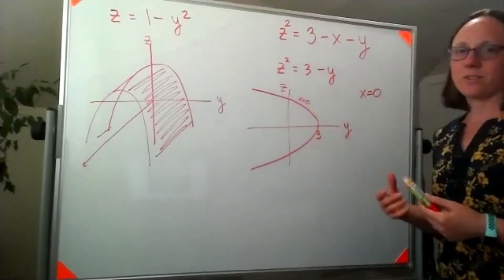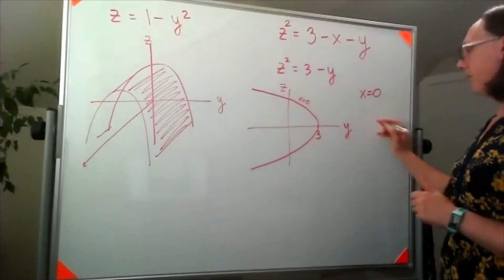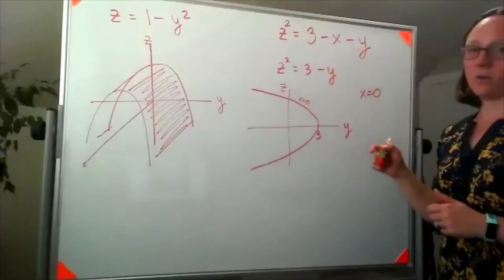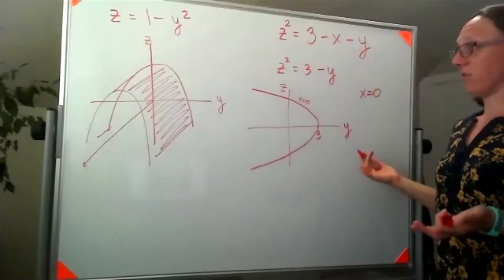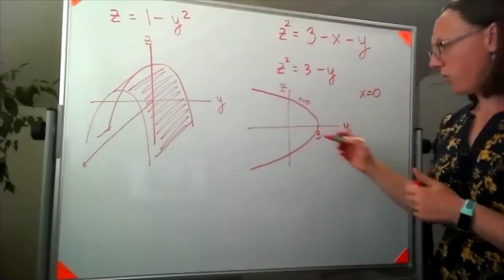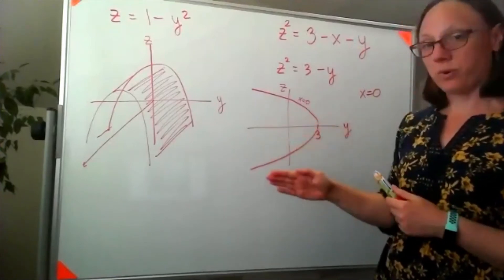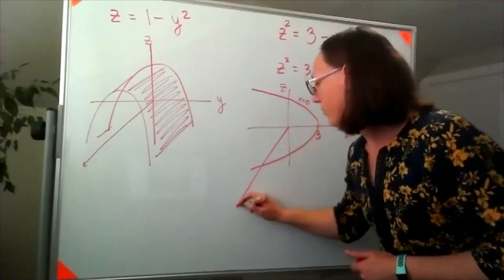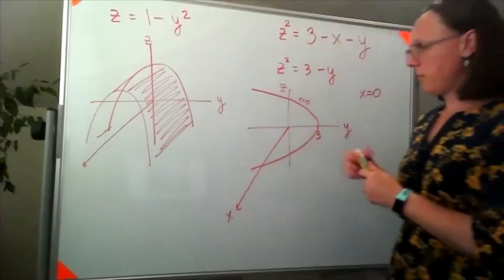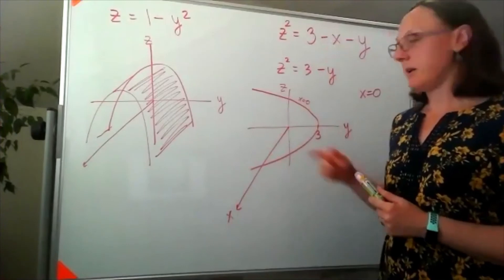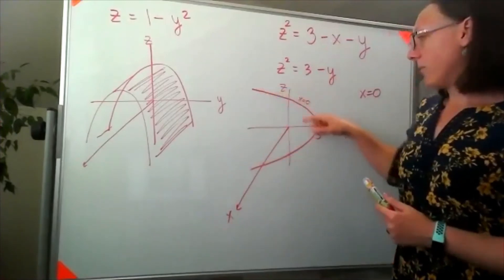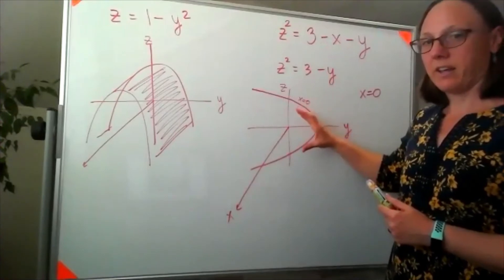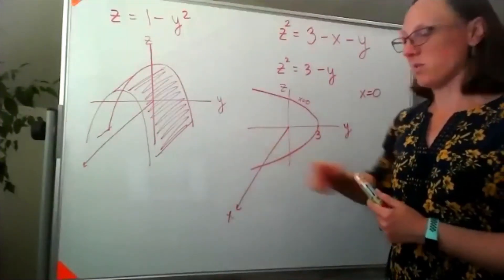But what happens when X equals 3, for example? If X equals 3, then I just have Z squared is equal to negative Y. So by the time I've moved out 3 in the X direction, I'll draw my X axis here. By the time I've moved out 3 in the X direction, this parabola isn't back here at Y equals 3. The parabola is now over here at Y equals 0.